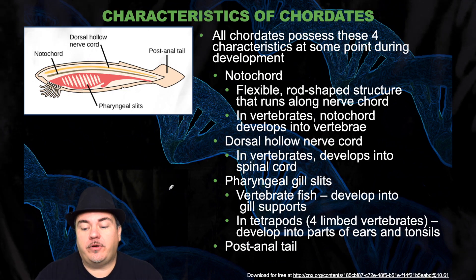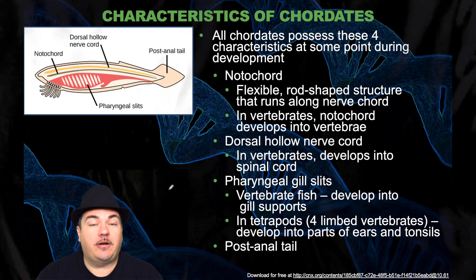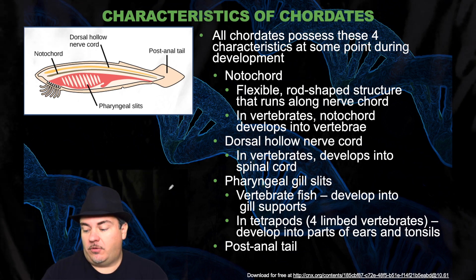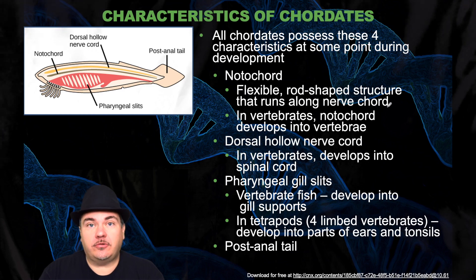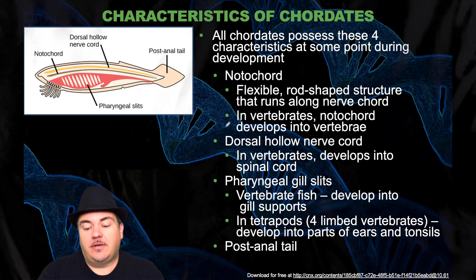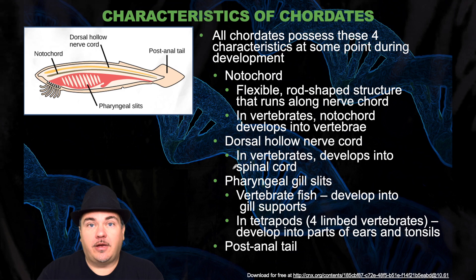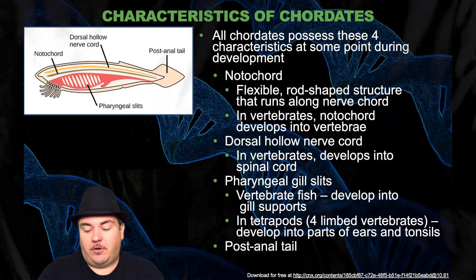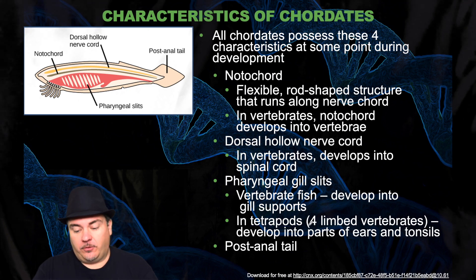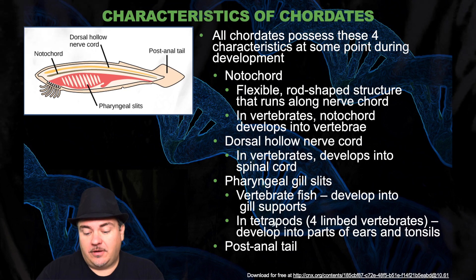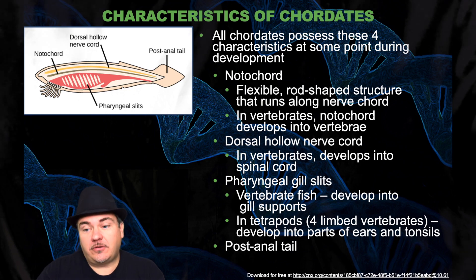All chordates have four characteristics at least at some point during their development. It might only be during embryonic development, but they all have a notochord, which is a flexible rod-shaped structure that runs along the nerve cord. In vertebrates, the notochord will develop into the vertebrae. They all have a dorsal hollow nerve cord, which in vertebrates develops into the spinal cord. They all have pharyngeal slits, which in vertebrate fish develop into gill supports, while in tetrapods — tetra meaning four, pod meaning limbed — the pharyngeal slits develop into parts of the ears and tonsils. And they all have a post-anal tail, at least during embryonic development.